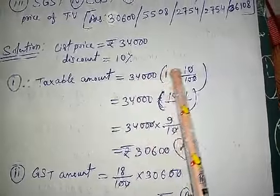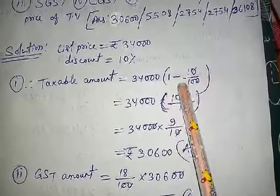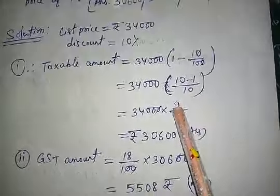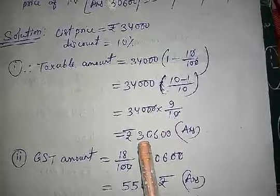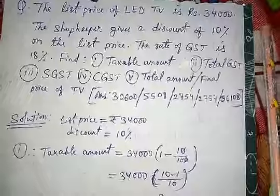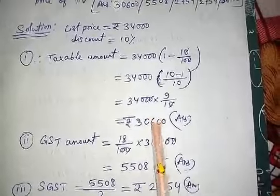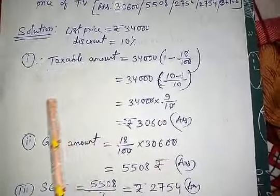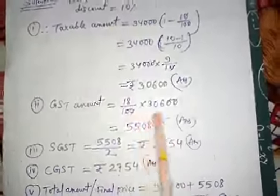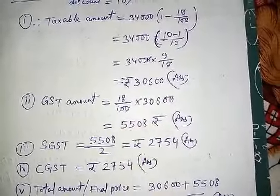We write 34,000 outside and (1 − 10/100) inside. Whatever the discount, we write 1 minus that discount divided by 100. When we simplify, we get (1 − 1/10) = 9/10, so taxable amount = 34,000 × 9/10 = Rs. 30,600. The price of the TV dropped from 34,000 to 30,600 after discount. Rate of GST is 18%, so GST = 18/100 × 30,600 = Rs. 5,508.